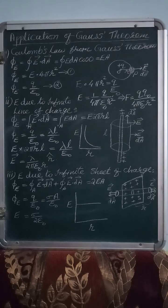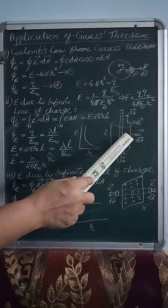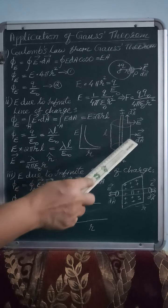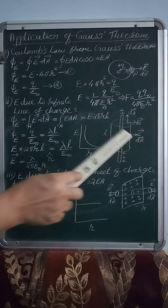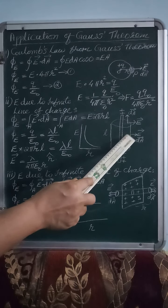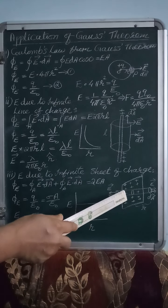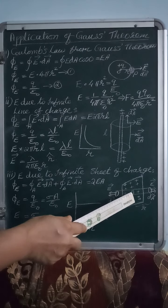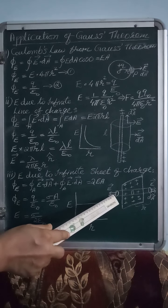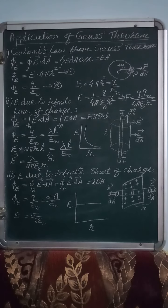Another difference: for the line charge (cylindrical Gaussian surface), only the curved surface contributes flux because for the flat circular surfaces theta is 90° and cos 90° = 0. Whereas for the sheet of charge, the curved surface does not contribute flux (theta = 90°), but the flat circular surfaces are considered because theta = 0° there, meaning maximum flux passes through them.